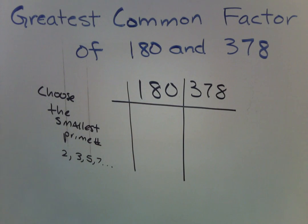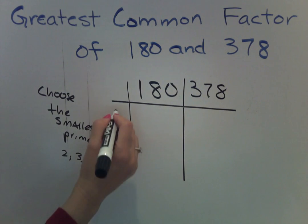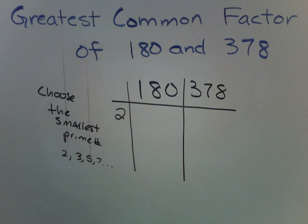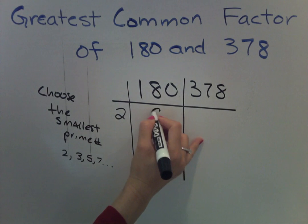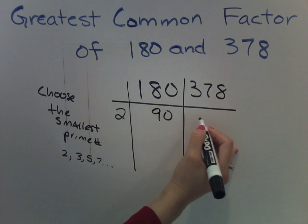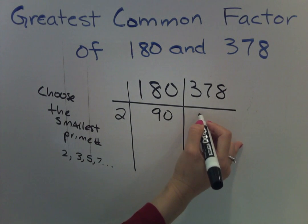So we recognize that 2 can go in 180 and 378 evenly. We put a 2 right here. 2 goes in 180 90 times. 2 goes in 378 189 times.